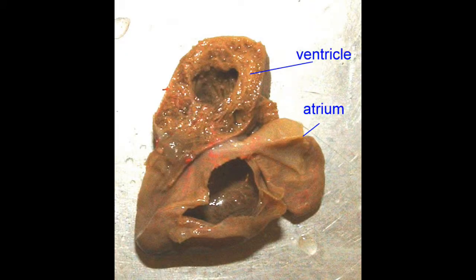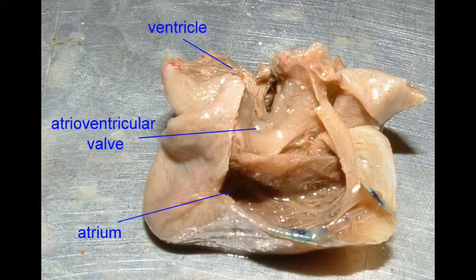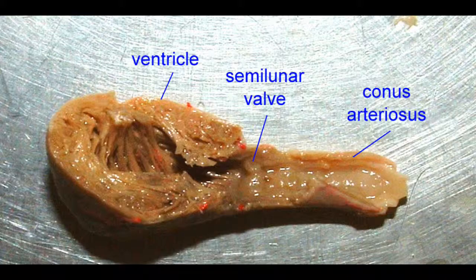Shark hearts possess the coronary blood vessels that the jawless fish lack, and here you can see that it also possesses semilunar and atrioventricular valves.